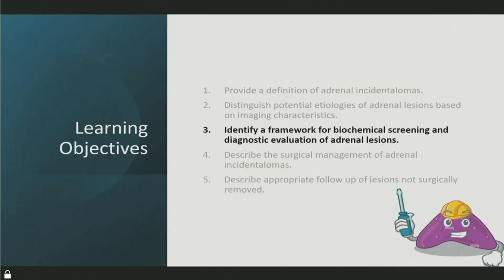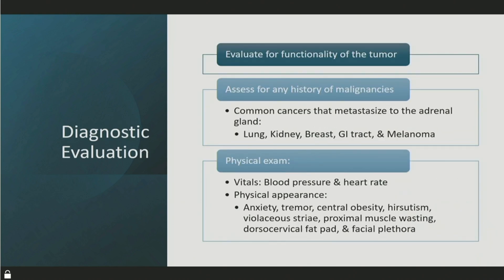For the biochemical screening framework: evaluate functionality of the tumor. Obtain a history of any malignancy — lung, kidney, breast, GI tract, and melanomas are most common to metastasize to the adrenal gland. Physical exam and history are very important, especially for hormone-driven etiologies. You'll look at physical appearance and get a lot of information from the patient for functioning adrenal lesions.